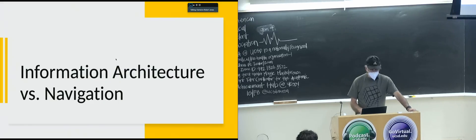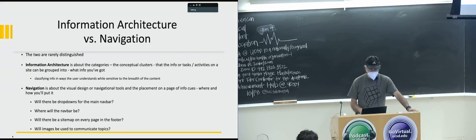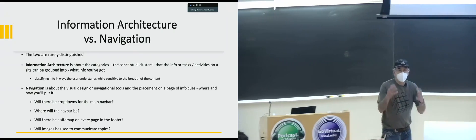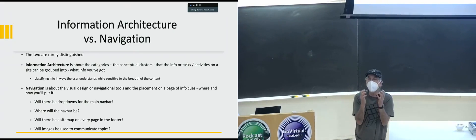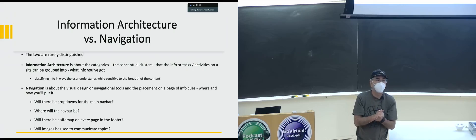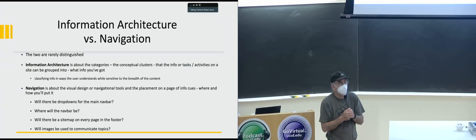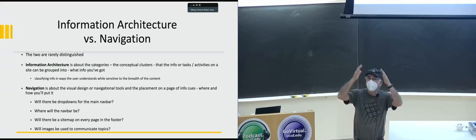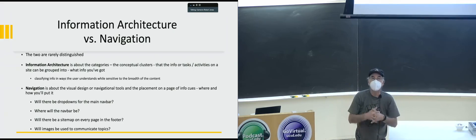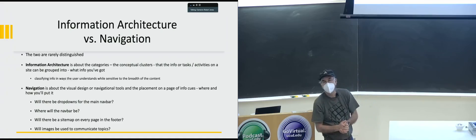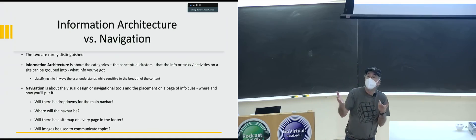We've talked about the difference between information architecture and navigation. Information architecture refers to the pockets, the concepts, the way you organize and think about the information on a website, and the relations between those things. There are different kinds of ways that information can be conceptualized — that's your information architecture. And then there are the names you use, which could be part of the IA but will certainly be part of your navigation too.